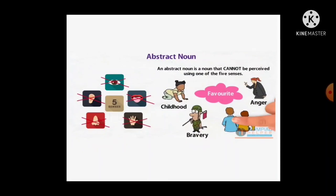Abstract noun. These are the names of things which cannot be touched or seen. An abstract noun is a noun that cannot be perceived using one of the five senses. These are mainly the names of qualities, actions and states. Examples: childhood, bravery, anger.